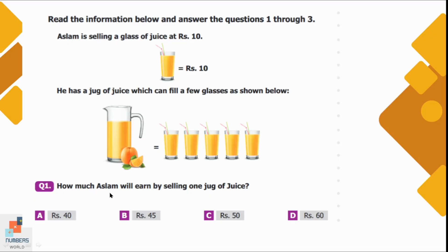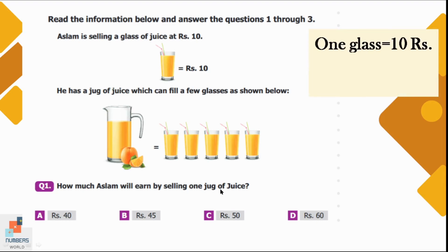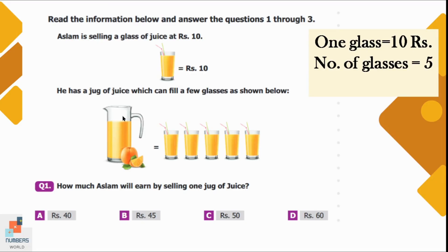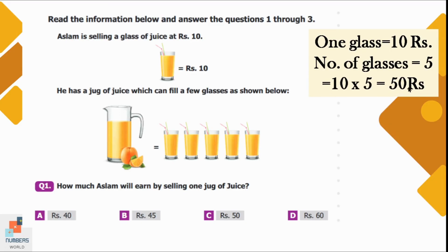Question number 1: How much will Aslam earn by selling one jug of juice? The cost of one glass is 10 rupees and 5 glasses can fill one jug. So if we multiply 10 by 5, the answer is 50 rupees. Aslam will earn 50 rupees by selling a jug of juice. Option C is the correct option.